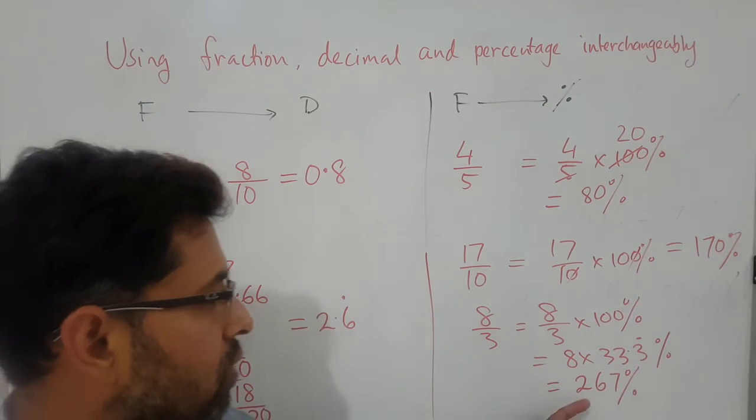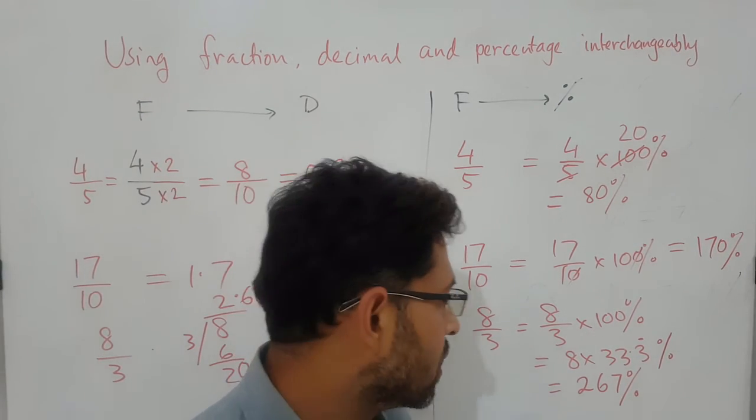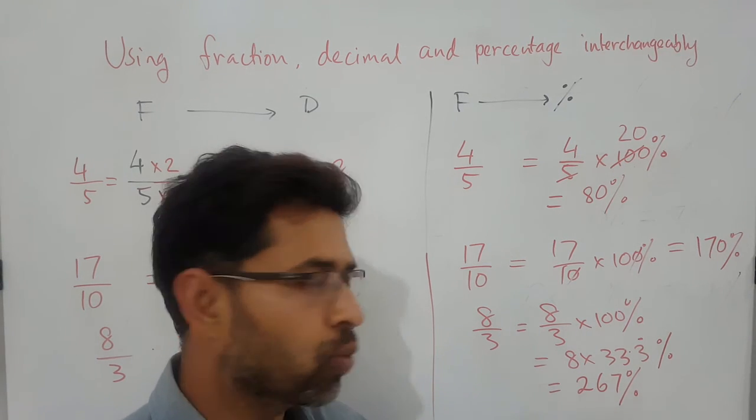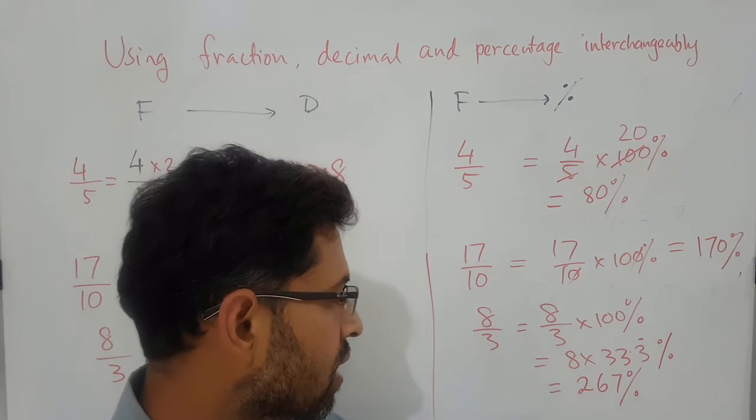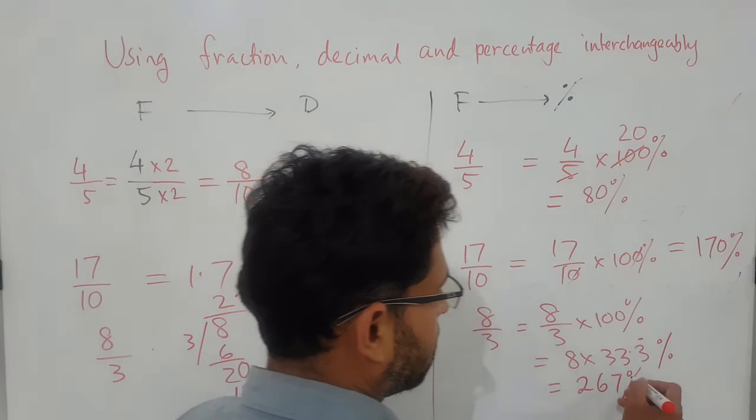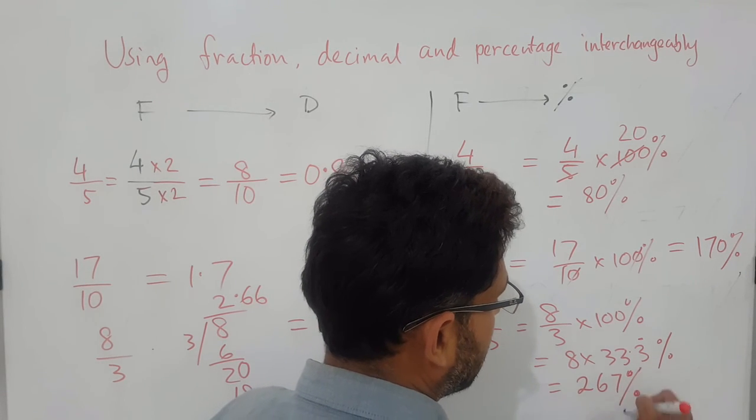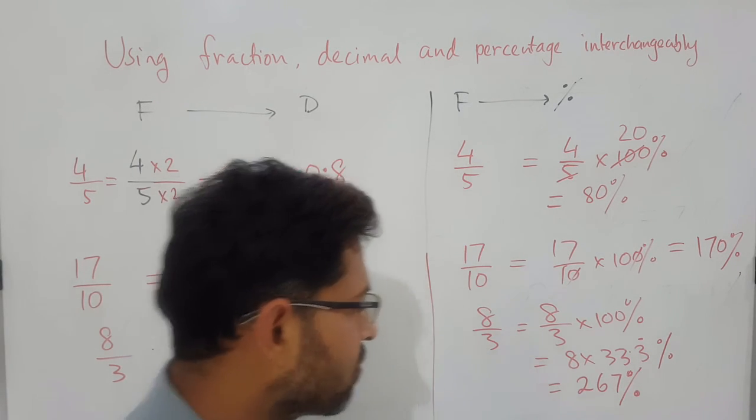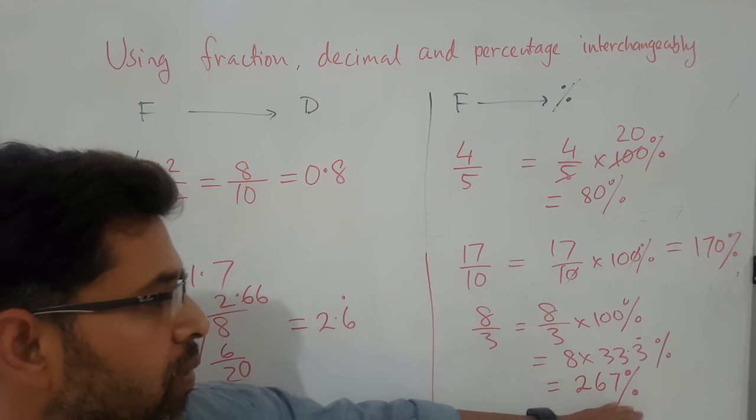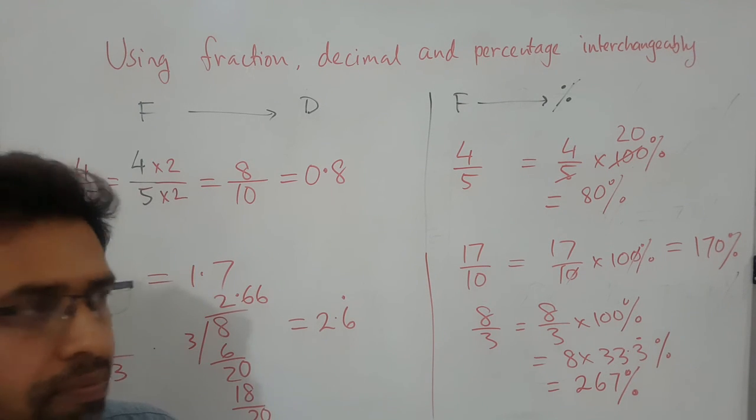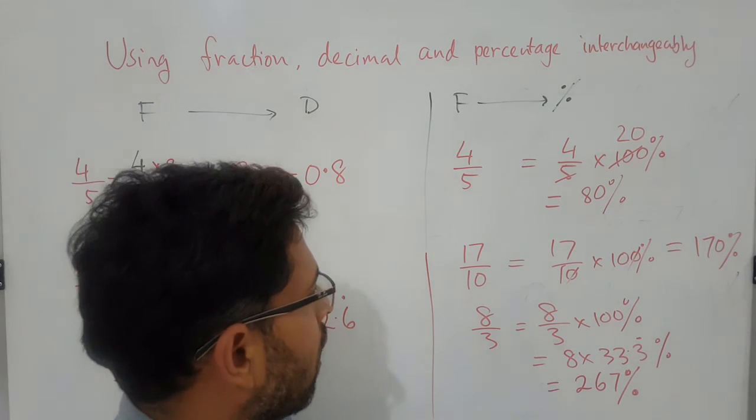Because we know that 26666 is coming, so it is basically 266.6 or 266.7 percent. We used to write down the percentage without the decimal, that is fine, so if you just leave it 267 percent, that is fine.